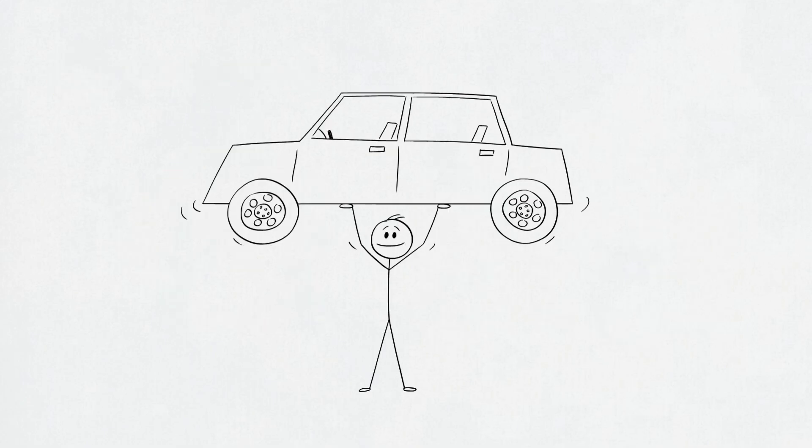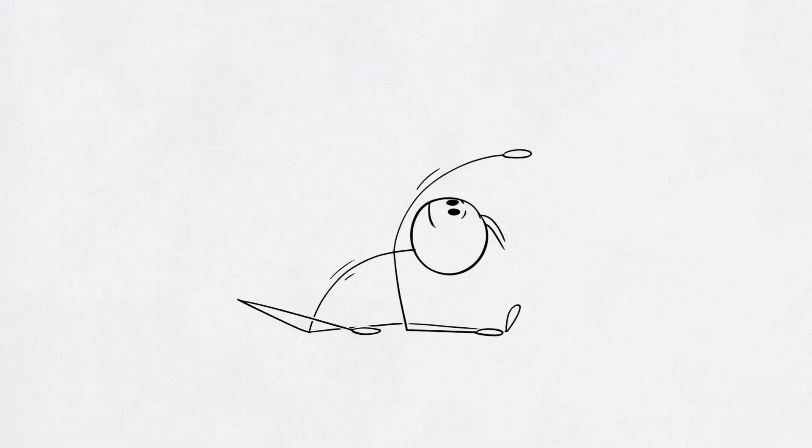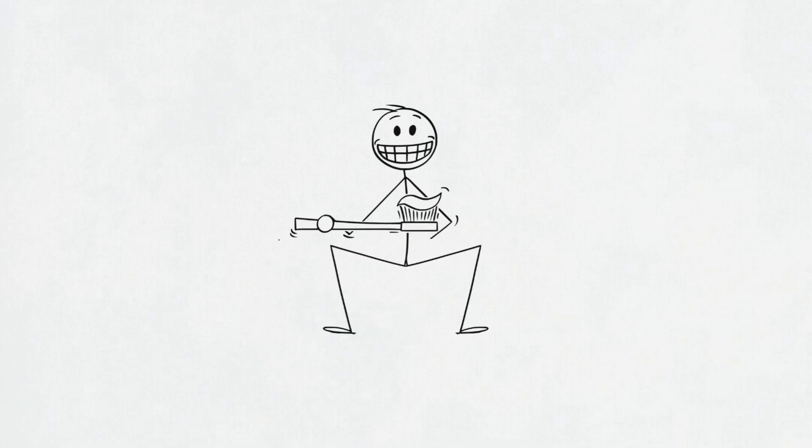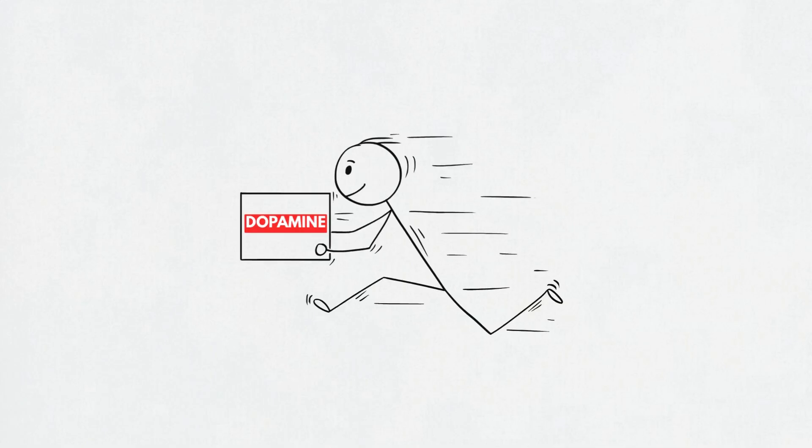Next, move your body. You don't need to deadlift a Prius. Just get blood flowing. Walk for 20 minutes, do squats while brushing your teeth or dance. Dopamine will show up with snacks.